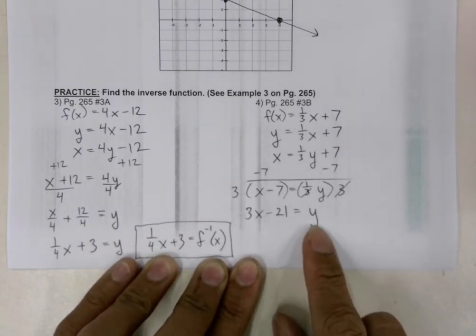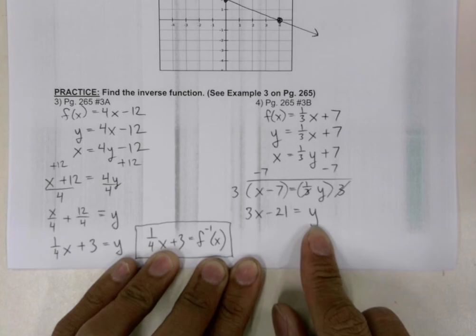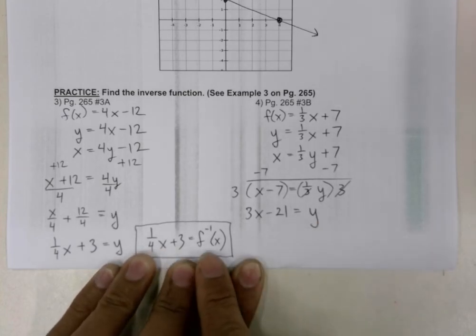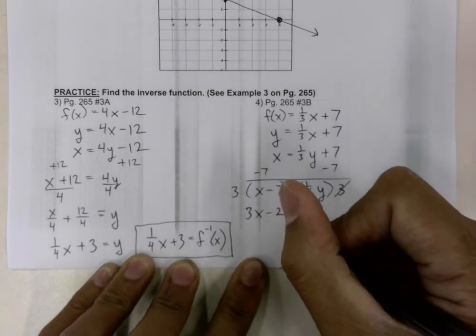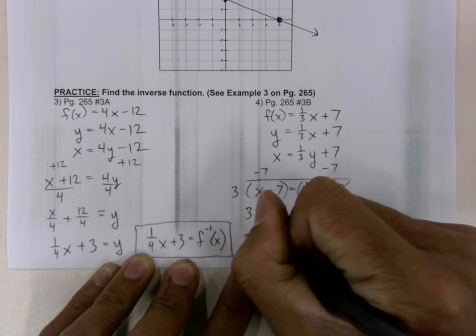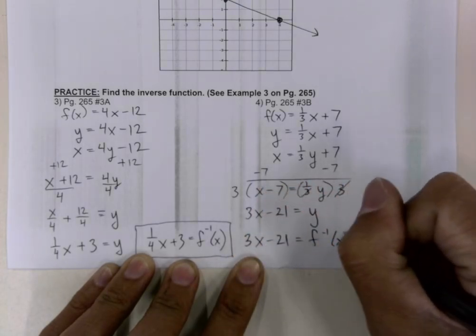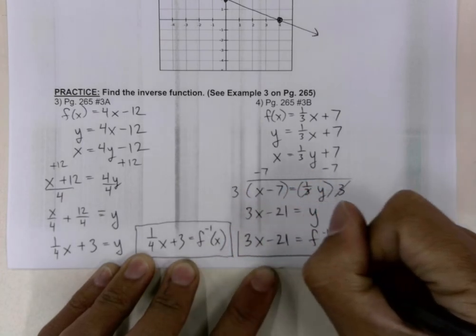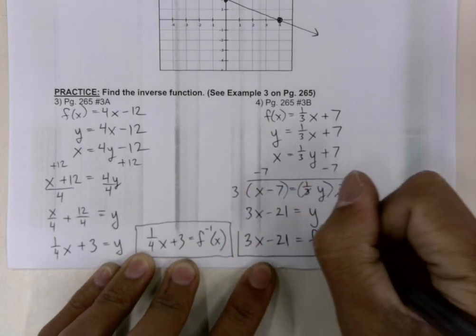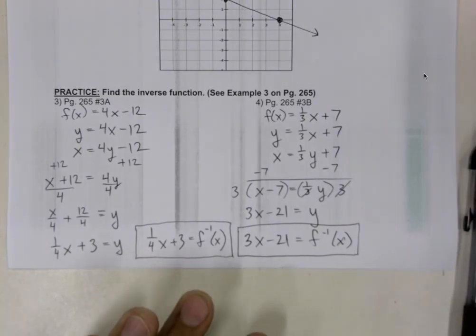Now that we've solved the equation for y, we can replace y with the inverse of f of x. And let's put a box around that. And let's do it again.